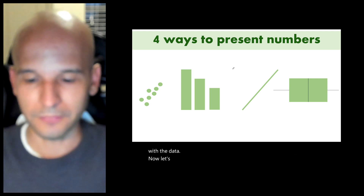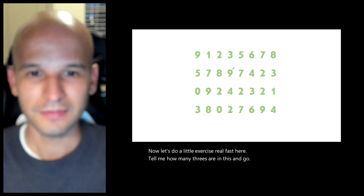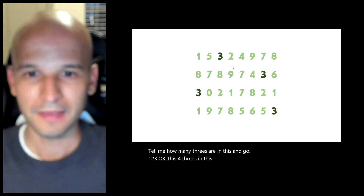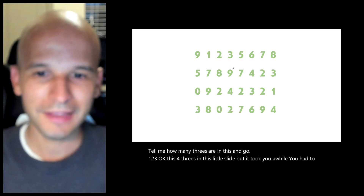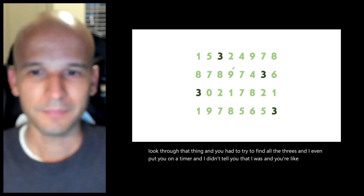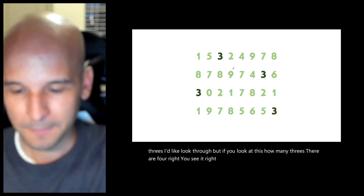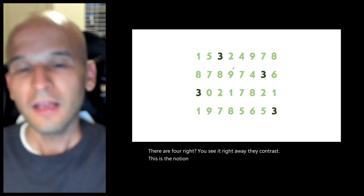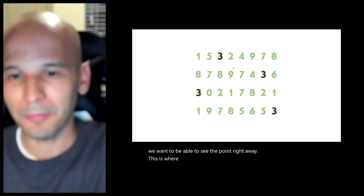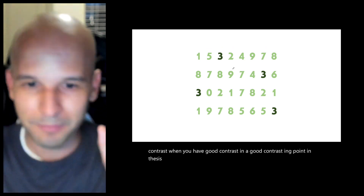Let's do a quick exercise. Tell me how many threes are in this — go. There are four threes, but it took you a while. You had to look through and find them. But if those threes are visually highlighted and contrasted, you see all four right away. This is the notion of pre-attentive attributes. When we look at your graph, we want to be able to see the point right away. Emphasis comes through contrast — when you have good contrast and a clear contrasting point and thesis, that's what you want.